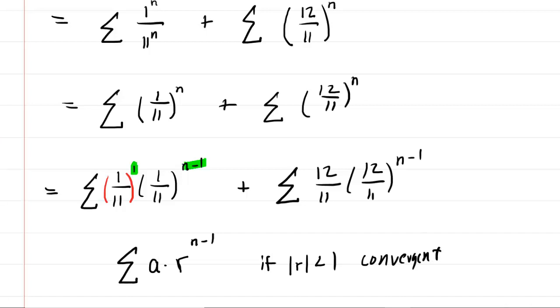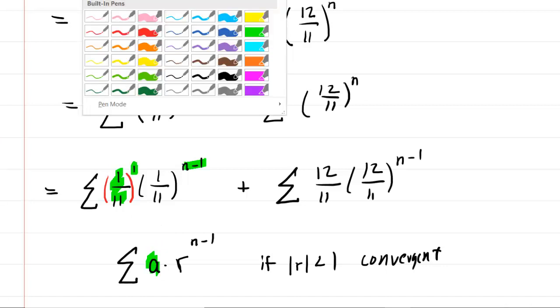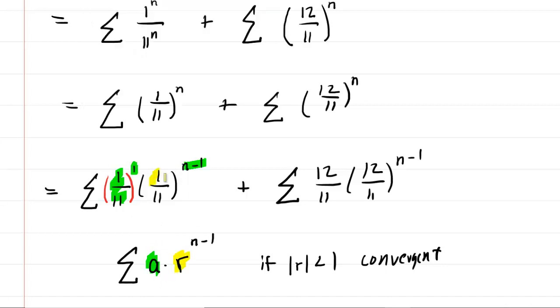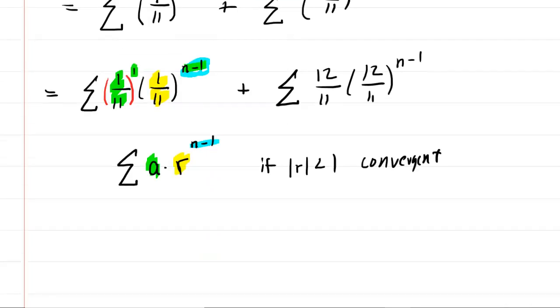So for example, look at the first series. We have a value of a which is one 11th. We have an r which is also one 11th, and then we of course have this n minus one exponent. So in this case, for the first series, the absolute value of our r, which is one 11th, would indeed be less than one. So the first series is, lo and behold, convergent.